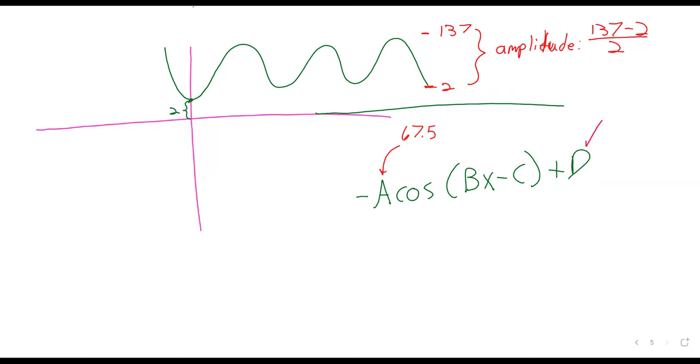This D is the midway point between 137 and 2. I sometimes think, this is definitely a mistake I've made, to find the amplitude we subtract and divide by 2. To find D we add and divide by 2. So 139 divided by 2, 69.5.